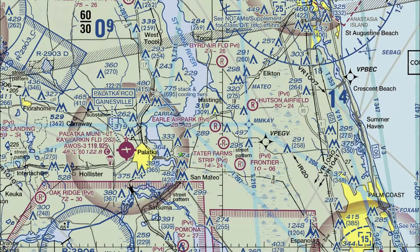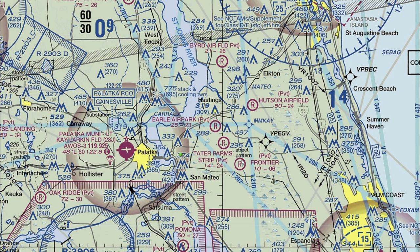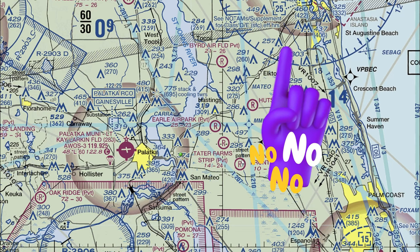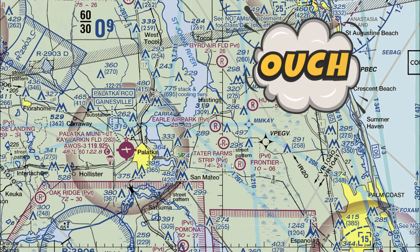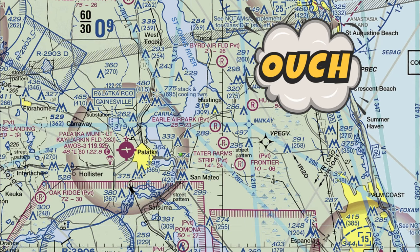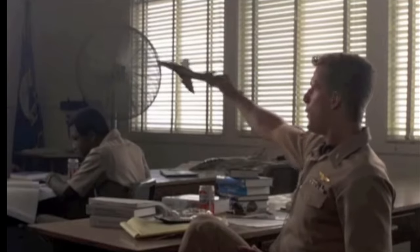Next, we're going to look at these little circles with R's in the middle of them. That pretty much means restricted — don't go there. Most of these restricted places are airfields, and some of them are listed here, like private Hudson Airfield. You don't really want to land at these places unless you've got a good reason to — or maybe your plane's just falling out of the air.